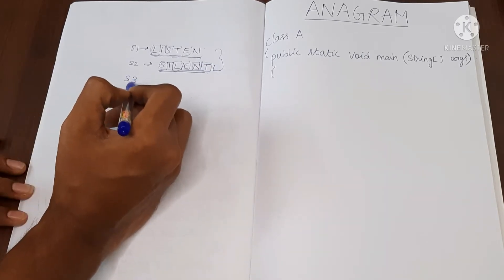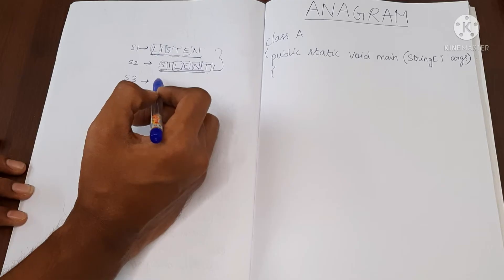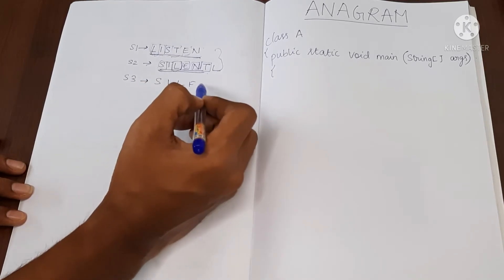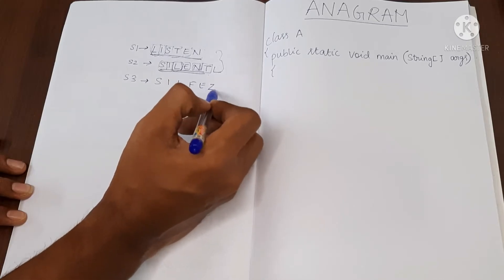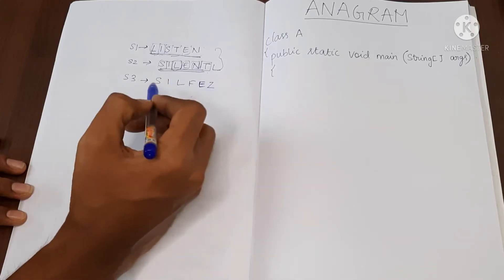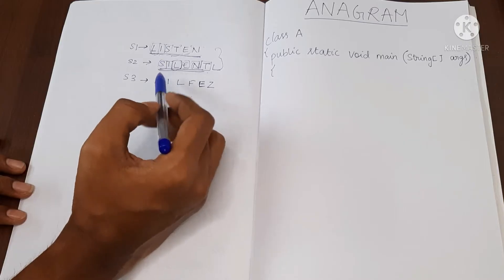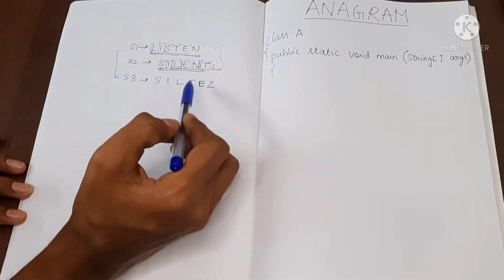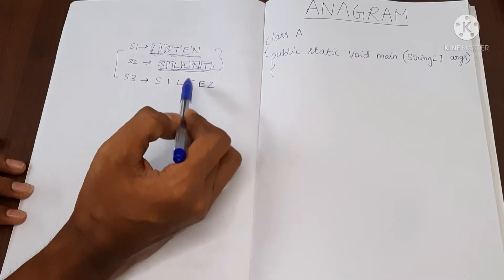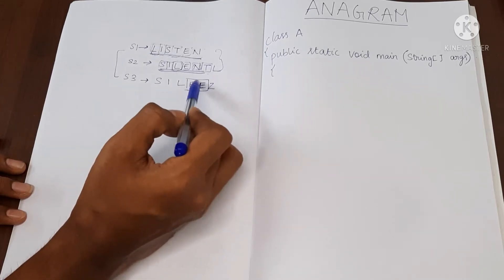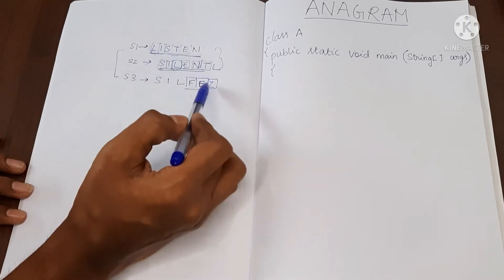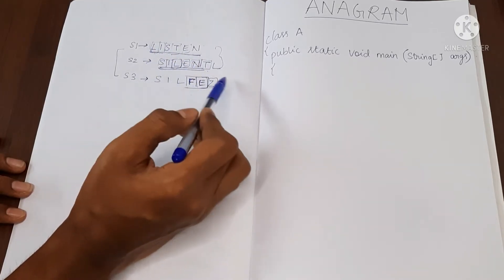Let's take one more example. Let's say we have one more string S3 which is 'S, I, L, F, E, Z' — some different string. We can notice that S1 and S3 are not anagram because S3 has some characters which are not present in S1. Therefore these two are not anagram.